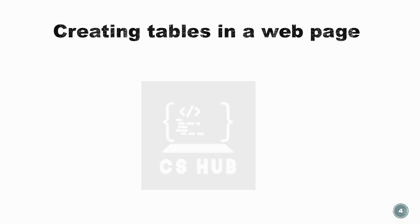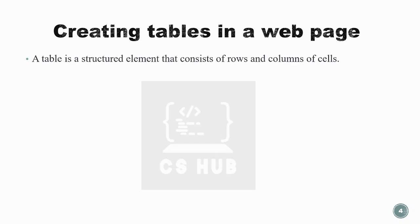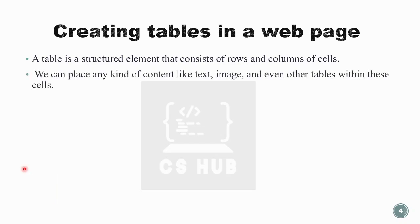Let's start with creating tables in a web page. A table is a structured element that consists of rows and columns of cells. We can place any kind of content like text, images, and even other tables within these cells.